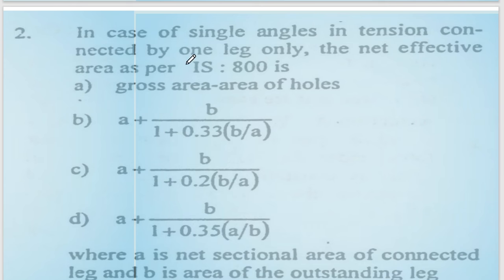Next question: in the case of a single angle in tension connected by one leg only, what is the net effective area? The effective area formula is available as per IS code, where A1 is the net sectional area of the connected leg, A2 is the gross sectional area of the outstanding leg.